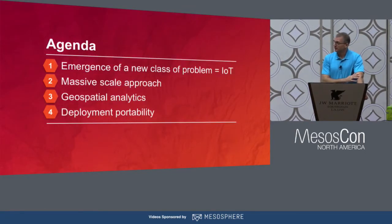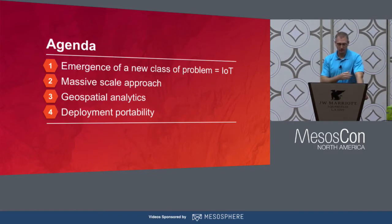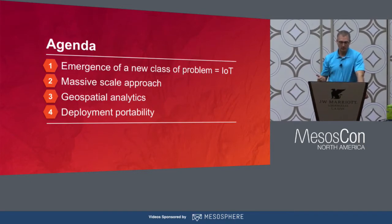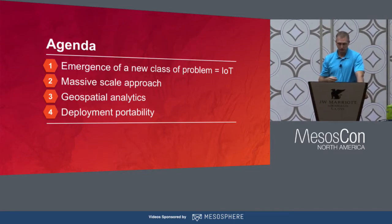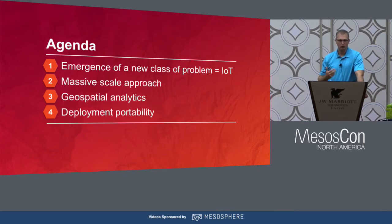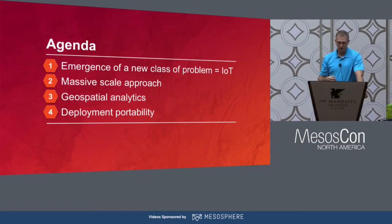The agenda for today: I'll talk about the emergence of a new class of problem driving us to take a new architectural approach with geospatial. We'll talk about our approach toward massive scale using DCOS and the Mesosphere ecosystem, geospatial analytics, and writing applications that are portable across public cloud, private cloud, and on-premise environments — using DCOS as the consistent delivery mechanism.